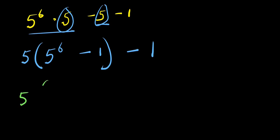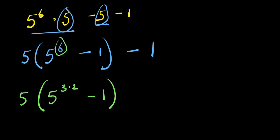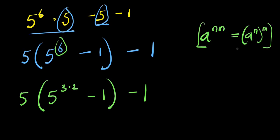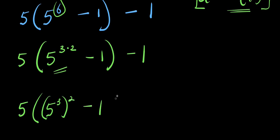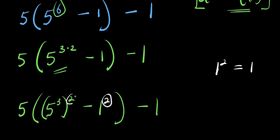I can have 5 times 5 to the power of 6. I can express this 6 as 3 times 2, so 5 to the power of 3 times 2. Then I have minus 1, and this is minus 1. Now remember, if you have a to the power of n times n, this equals a to the power of n raised to the power of n. Applying this right here, I can also raise this 1 to the power of 2 because 1 to the power of 2 is the same thing as 1, because I want this to be the same.